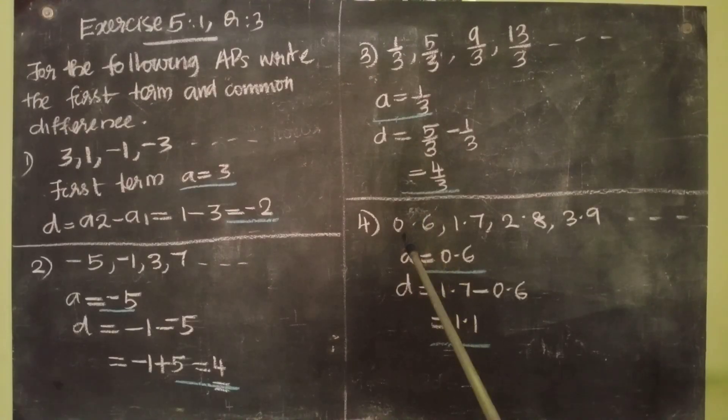Fourth question: 0.6, 1.7, 2.8, 3.9, etc. A equal to 0.6. D equal to second term minus first term, 1.7 minus 0.6. D equal to 1.1.